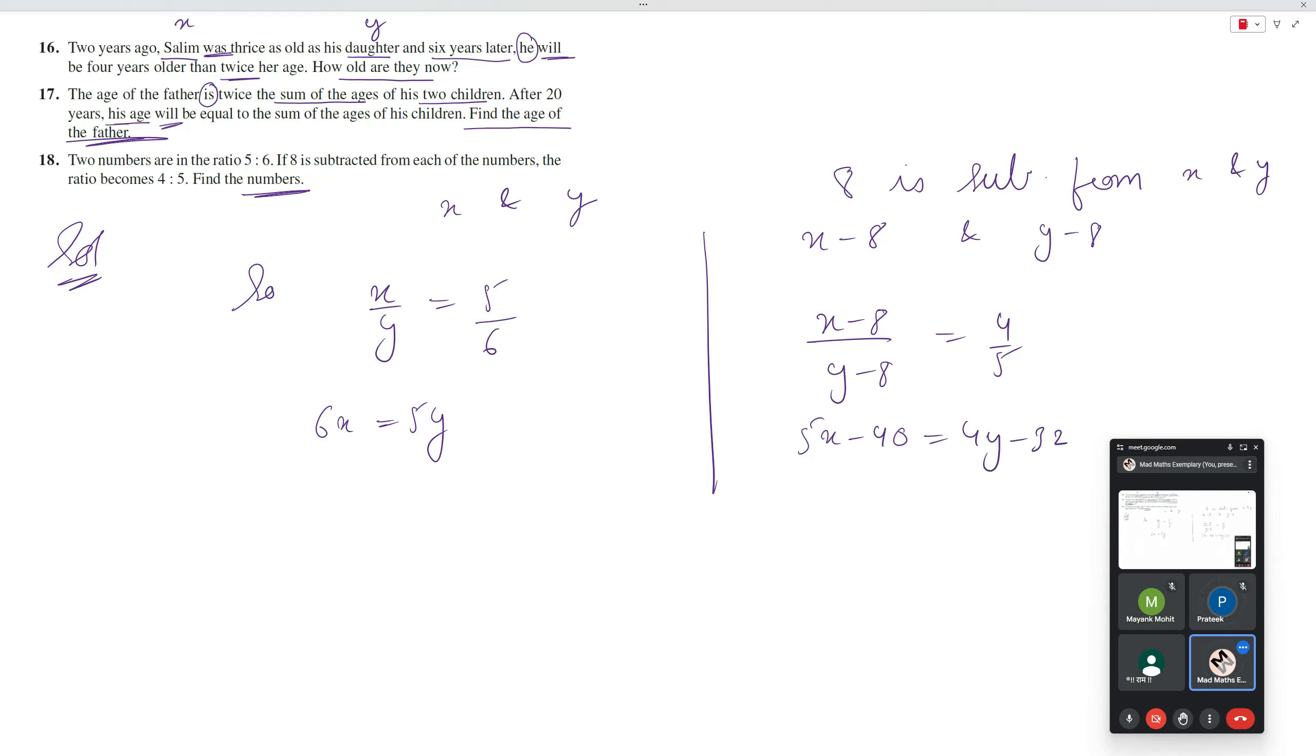All right, so x is equals to 5 by 6y, so 5 into 5 by 6. Then 6 into 40 minus 240. 6 for 24 and this one 192, 25y minus 24y is equals to y, 240 minus 192 is equals to 48, so y is equals to 48.